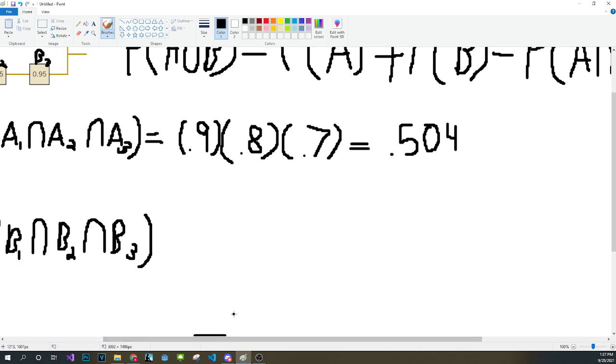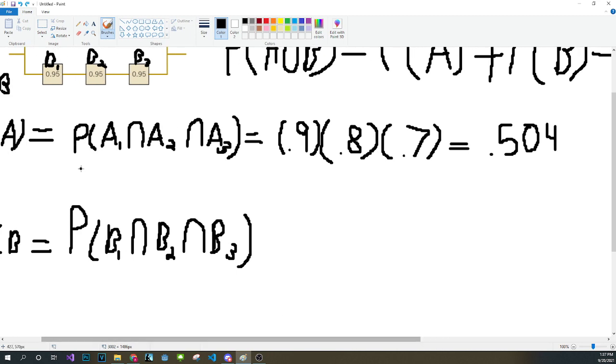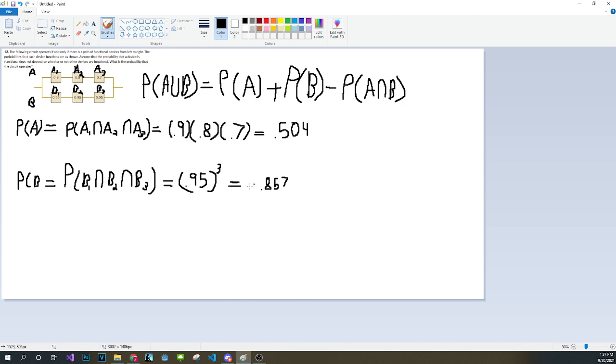If we do the same thing for this, so notice that this is 0.95, 0.95, 0.95, what the book will do is it will do 0.95. This just implies that since these three are the same, it will multiply itself and just cube. So in that case it would be 0.857. So we have the probability of A, we have the probability of B, now we can start plugging into the equation.